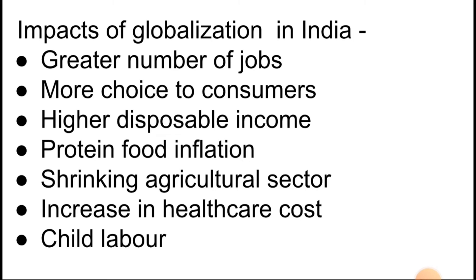The third impact is higher disposable income. As people are getting more and more jobs, they will have higher disposable income — especially people in big cities working in multinational companies and earning good salaries. Many Indian companies have also become international companies operating in different parts of the world, such as Tata, Mahindra, the Adani Group, the Hinduja Group, Bajaj, HCL, and Infosys — these are all very big multinational giants. Foreign companies from the USA, Canada, and Europe also started operating in India, providing good salaries and jobs.